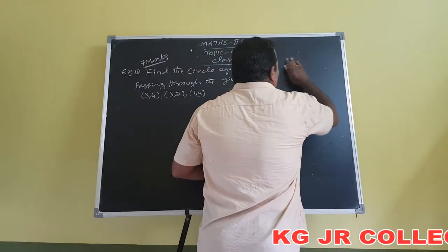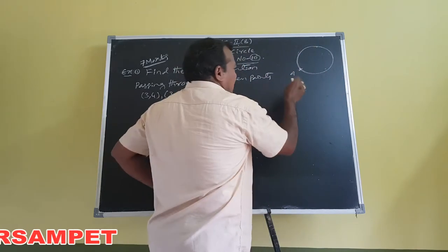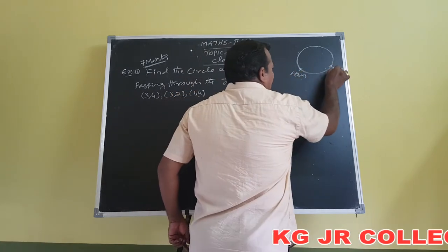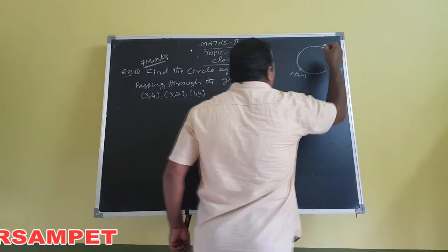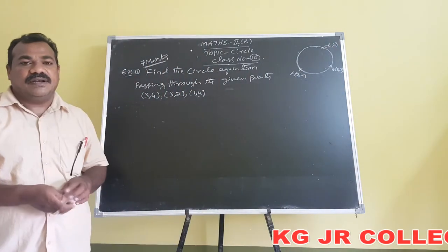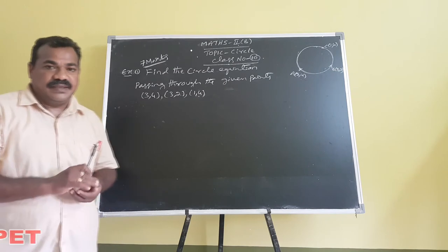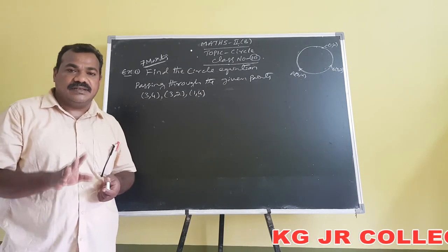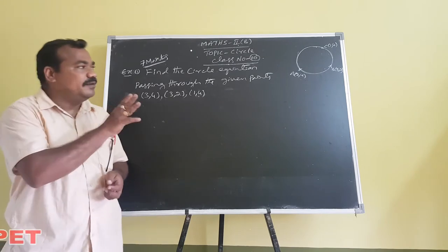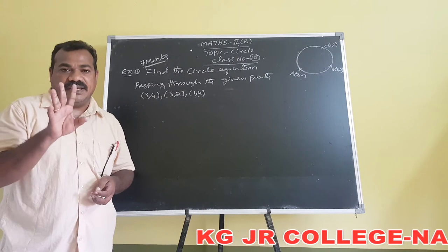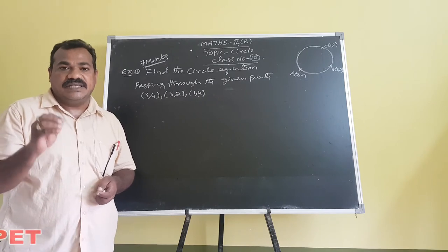So first, we draw the rough diagram. The circle is passing through the given three points: A equals (3,4), B equals (3,2), and C equals (1,4). We have to find out the circle equation passing through the given three points. First, we consider the circle equation in the general form. The circle equation in the general form is x² + y² + 2gx + 2fy + c = 0. Substituting all three points in that equation, we will get three equations. Solving these three equations, we get the values of g, f, and c.